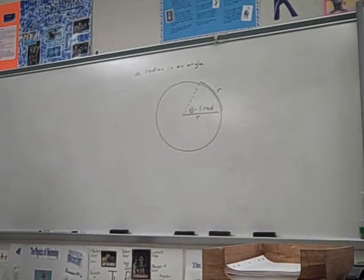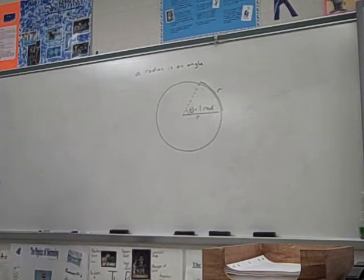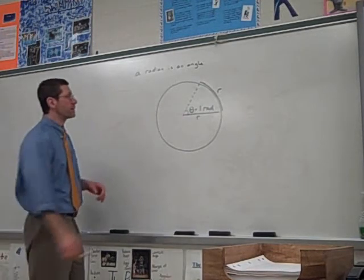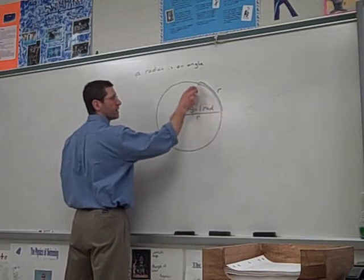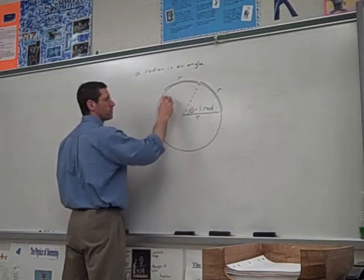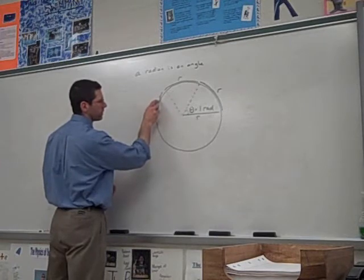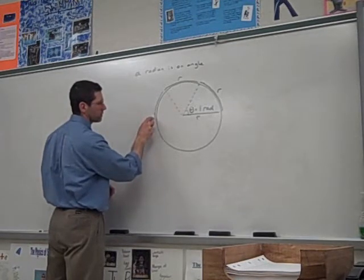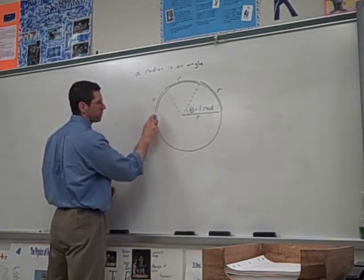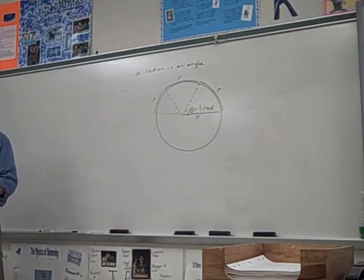And that angle is found when you take the radius and make an arc length equal to that. The angle you get is 1 radian. Do everybody get that? So theta is the variable I'm using for the angle, and that angle right there is 1 radian. Now, let's say I kept going. So I take the radius and I'm going to do it again. Here. R. So that's another radian. And I'm going to come here. Here. R. That's another radian. So how many radians is that? 3.